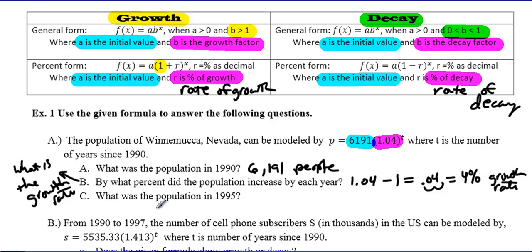Part C says, what's the population in 1995? From 1990, we count up 1, 2, 3, 4, 5, that's 5 years. So I have my function: p = 6191 times 1.04 to the 5th power. That will give me an answer of 7,532 people.